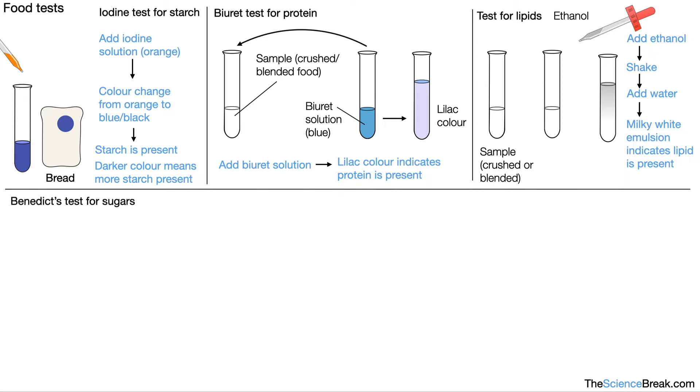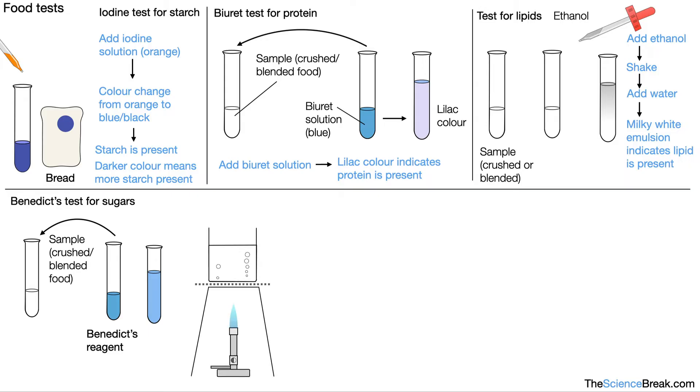Our next test is called the Benedict's test for sugars. Here again is our sample, which is either crushed or blended food. We would use Benedict's reagent, which is a blue color. Place that into our sample, and then we would have a mixture that we would place in a water bath.